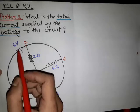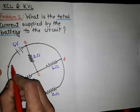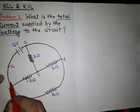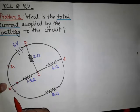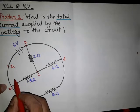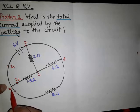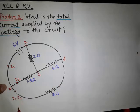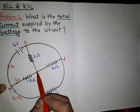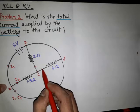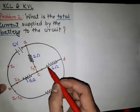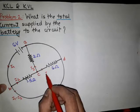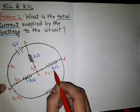Suppose the current supplied by the 6V battery is I1. This I1 current comes to node B and is distributed into two branches. The current going into the BC branch is I2, so the current going into the BD branch will be I1 minus I2. This I2 current comes to node C and is distributed again into two branches: the current going into CA is I3, and the current going into CD will be I2 minus I3.